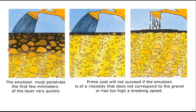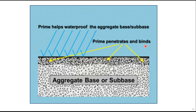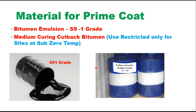The emulsion must penetrate the first few millimeters of the layer very quickly — that is the basic principle of applying prime coat, and this depth is around 8 to 10 millimeters. It will not be successful if the viscosity of the prime coat material is too high to penetrate through the base layer, and in that case it will be a wastage of resources. It also helps in waterproofing of the base layer and binds the aggregate together to provide a stable surface.